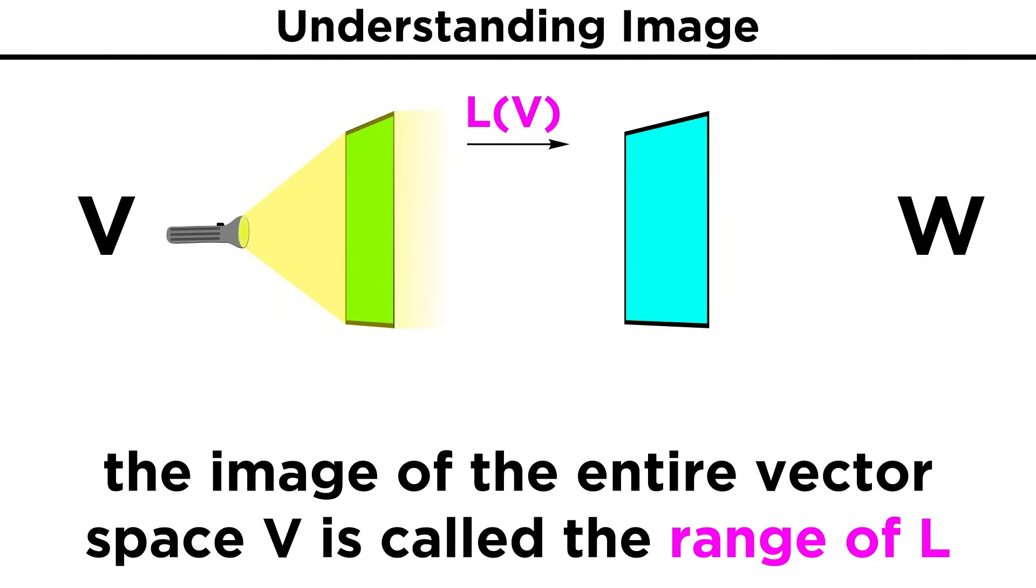The image of the entire vector space V, denoted this way, has a special name. It is called the range of L.